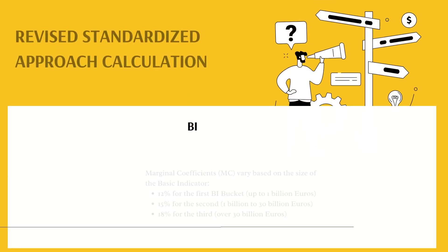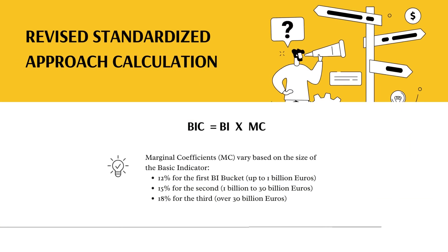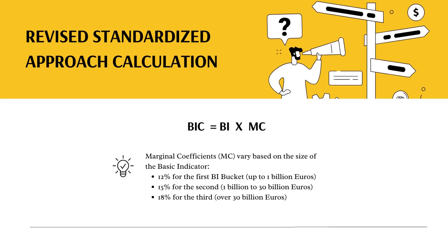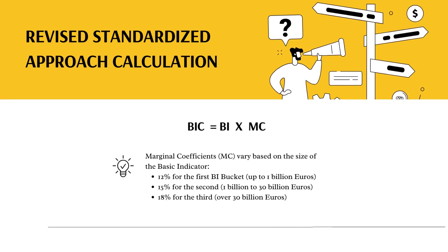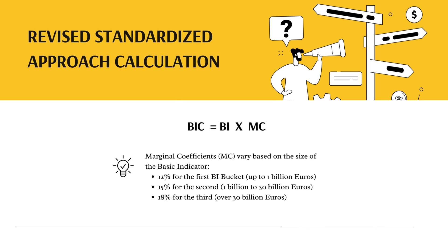Marginal coefficients vary based on the size of the business indicator: 12% for the first BI bucket, up to 1 billion euros; 15% for the second, 1 billion to 30 billion euros; and 18% for the third, over 30 billion euros.